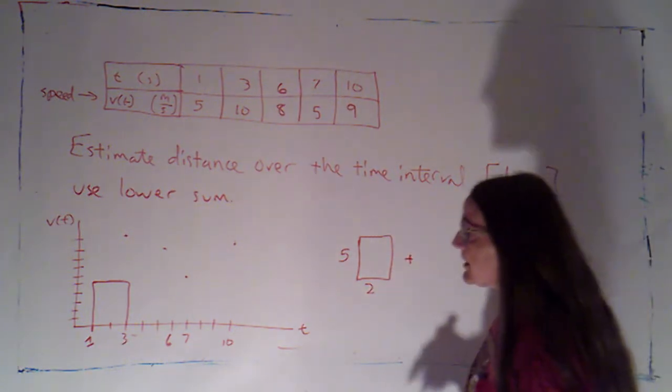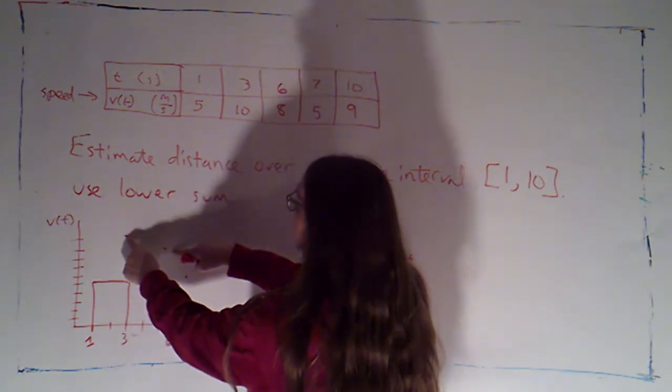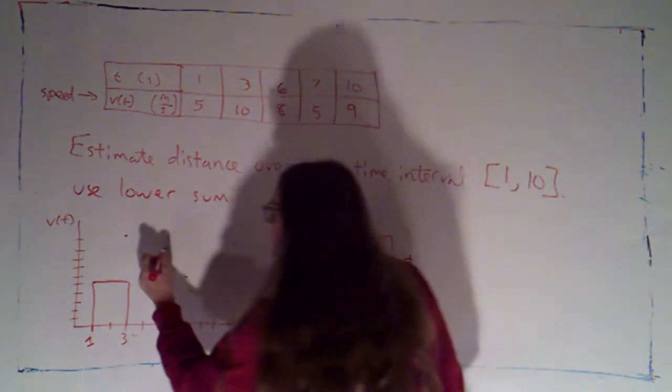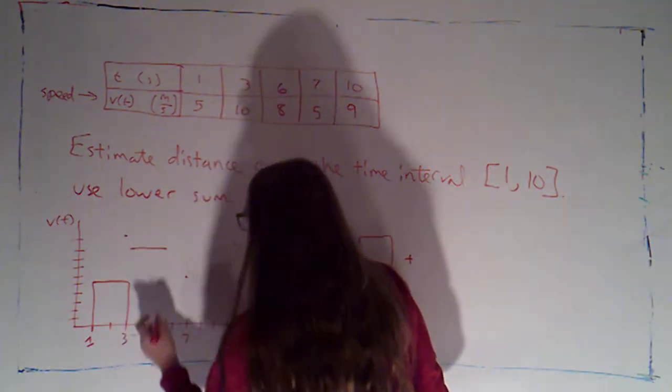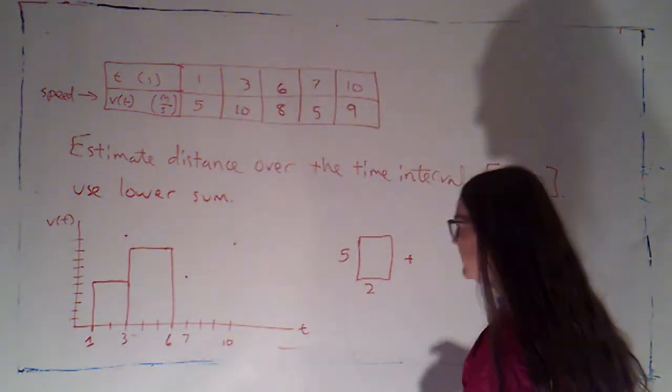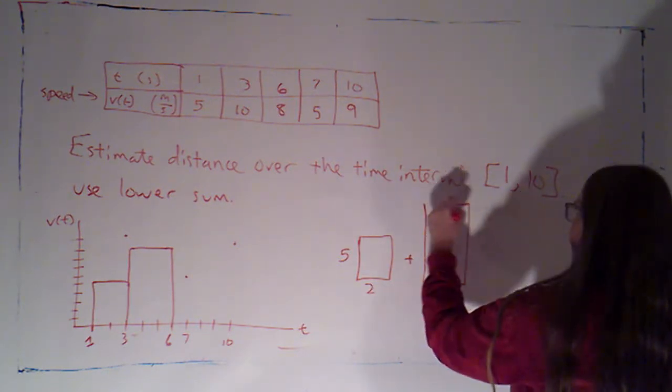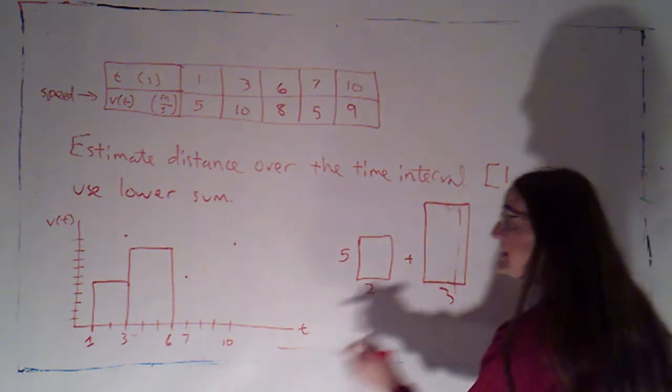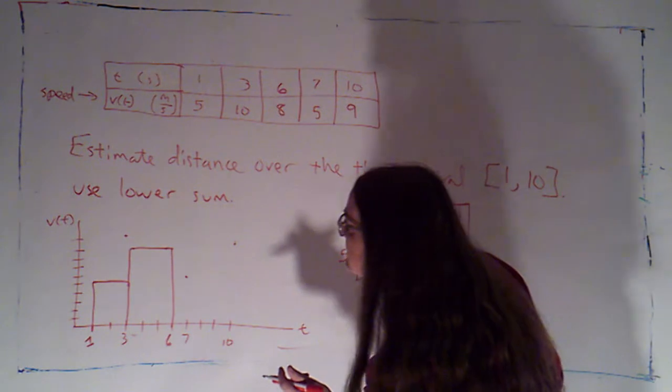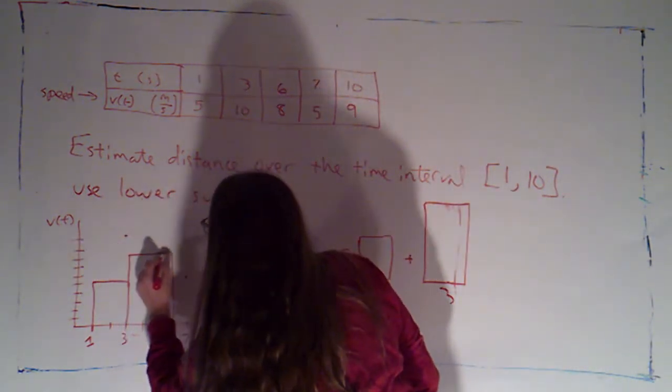The next subinterval goes from 3 to 6. Now these are the points that I have here. This height was 10. This height was 8. 8 is obviously the lower one. So that's the one I'll pick. I'll extend that over this interval and then drop these walls down to complete the rectangle. So that's giving me a rectangle like so. Now the base is 3 because this is 3 seconds. The height is 8. Looks like I inadvertently made that a little too high. Let's make that at 8. There we go.